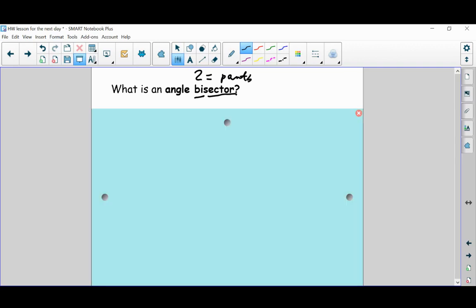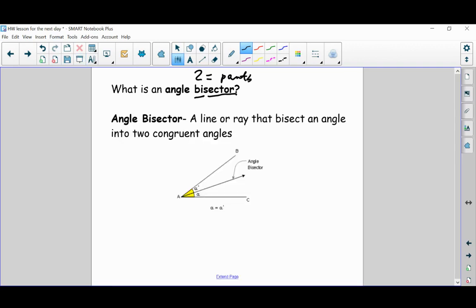And I have pictures about it. Angle bisector is a line or ray that bisects an angle. Cut an angle in half in two congruent parts. Exact the same two angles. So you can see the pictures below. Please draw the picture if you don't have it.